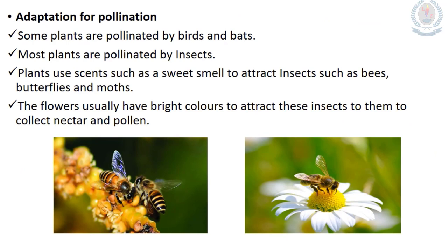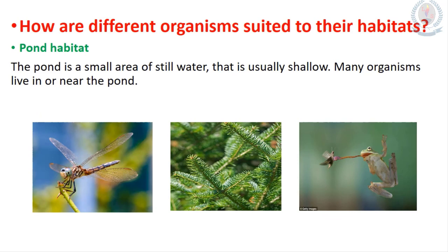Adaptations for pollination: some plants are pollinated by birds and bats, and most plants are pollinated by insects. Insects are attracted to flowers because of their bright-colored petals and aromatic scents.